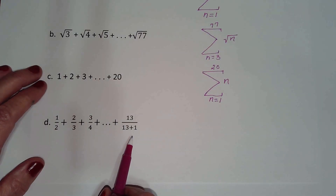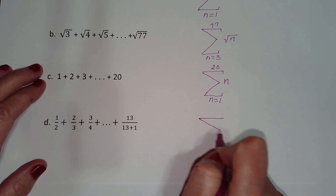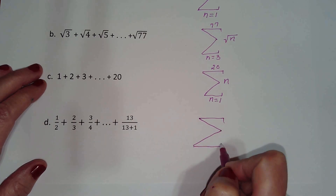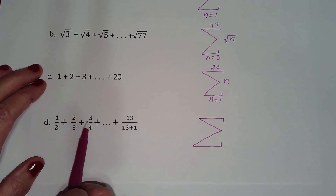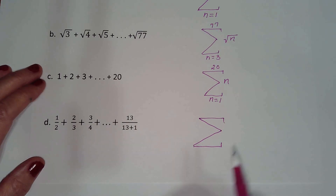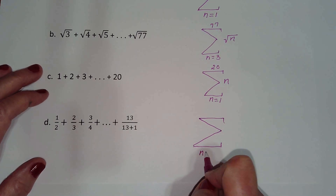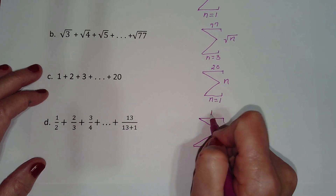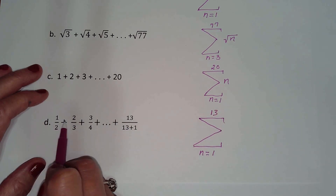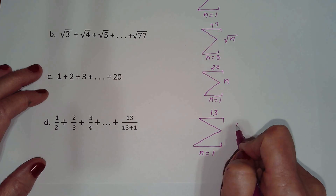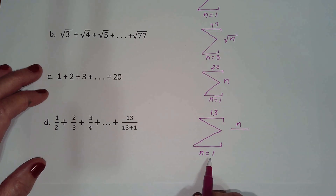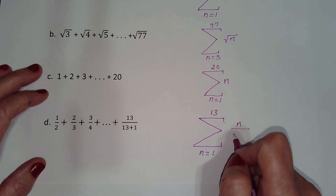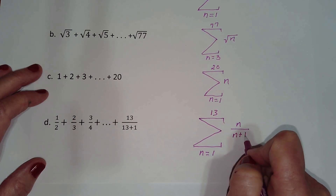Let's look at the next example. If I look at the numerator, it looks like the counting numbers starting at 1 and ending at 13. In the numerator I would have n, the counting numbers, and in the denominator I would have one more than what the numerator is — so n over n plus 1.